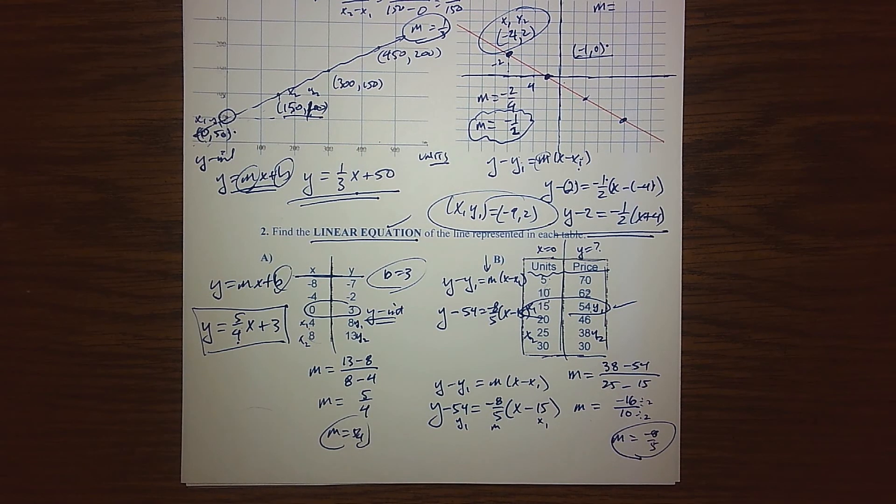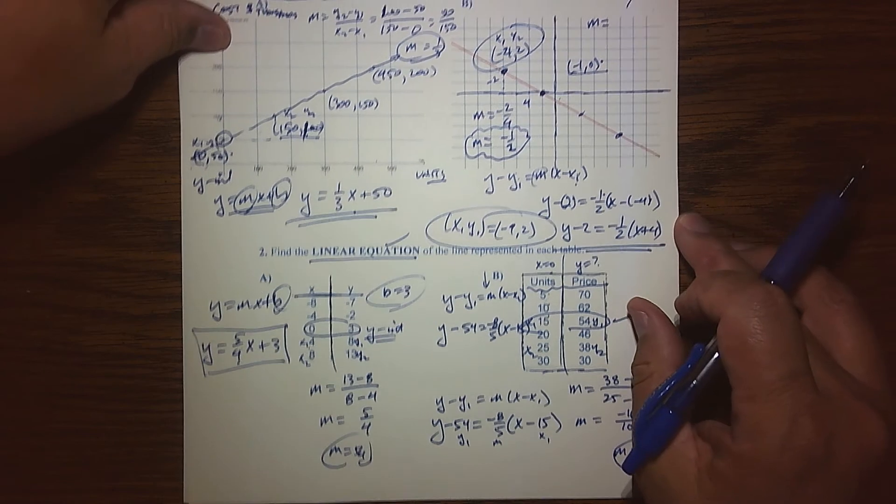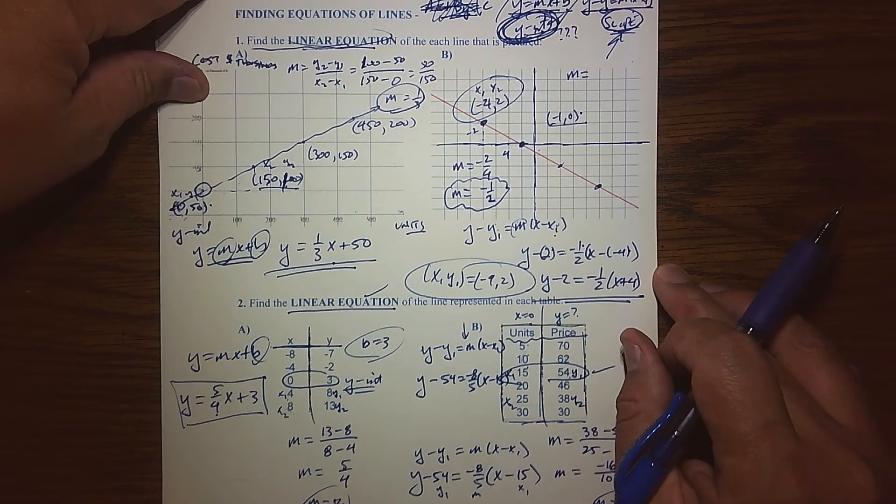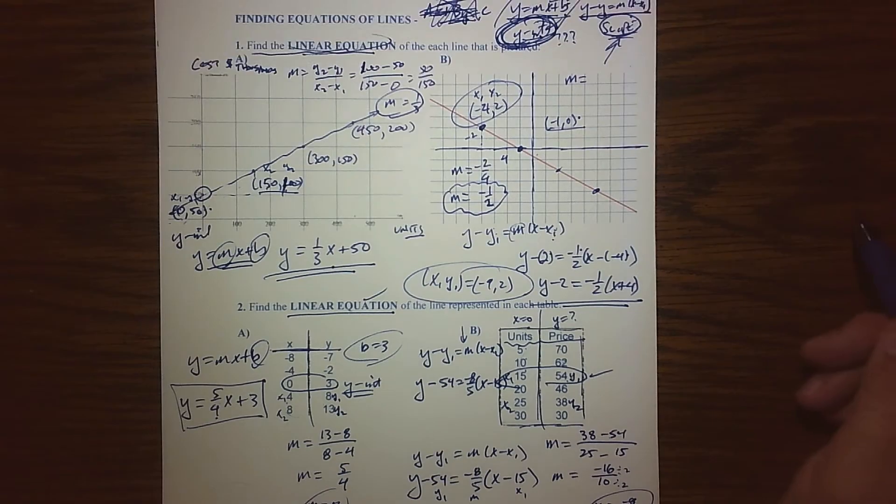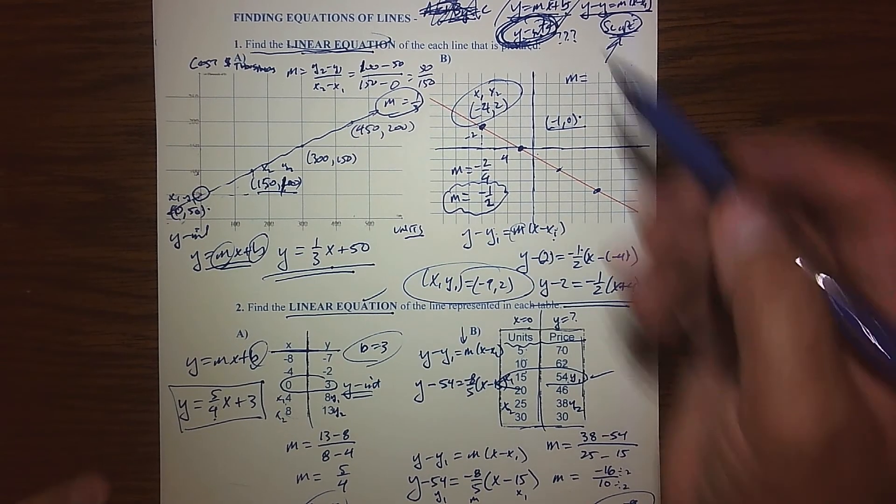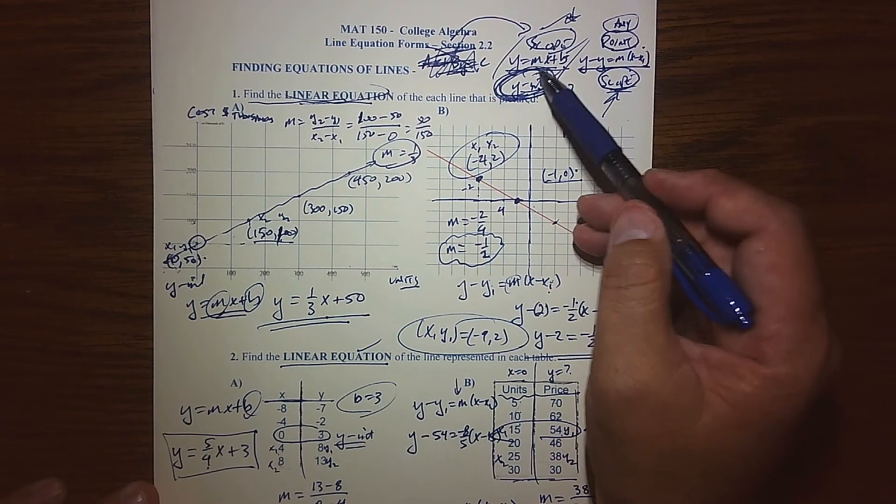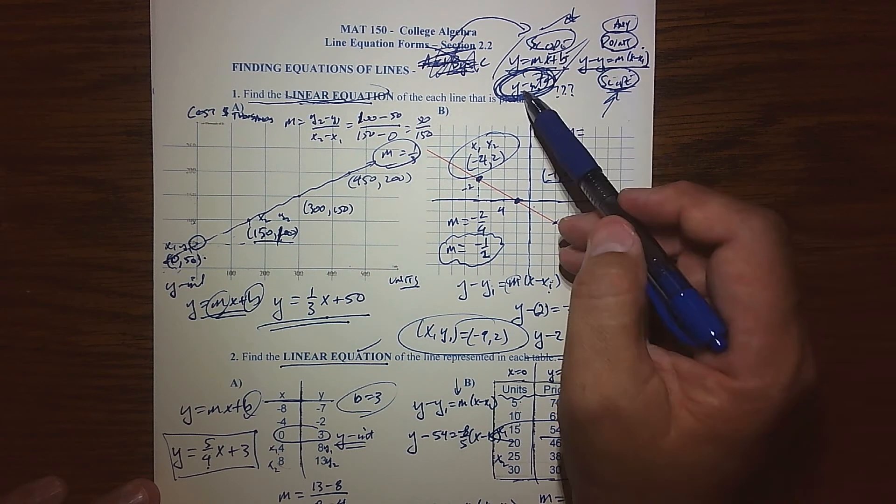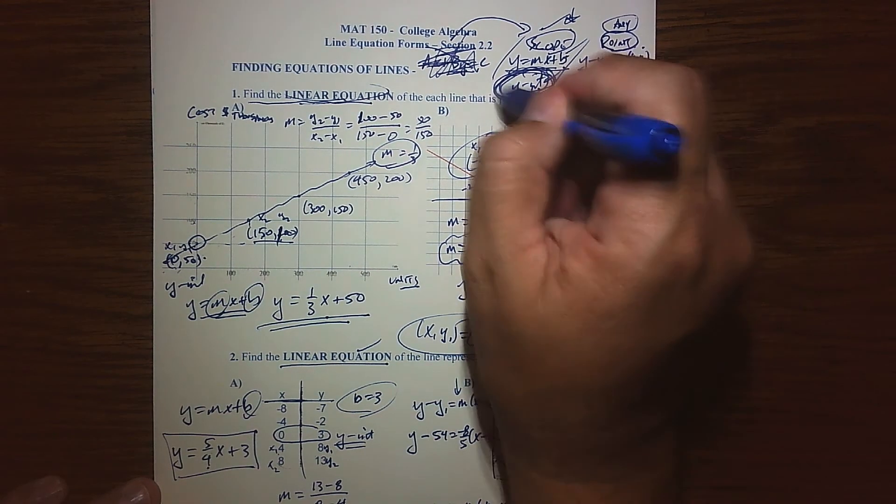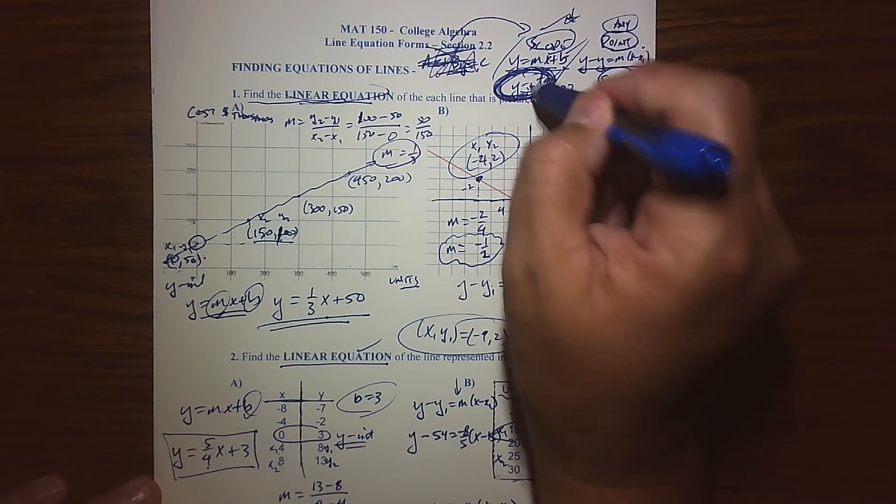So there you have it. So again, that idea: we're reversing ourselves. We're trying to find the equation that has the solution points given. And you have two choices, slope intercept or point slope. And it all drives: this is the most important aspect of it all, do I have the y intercept?